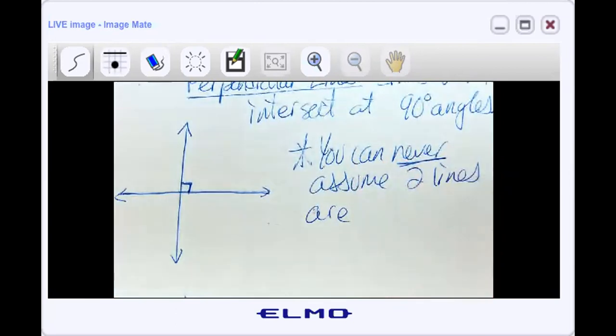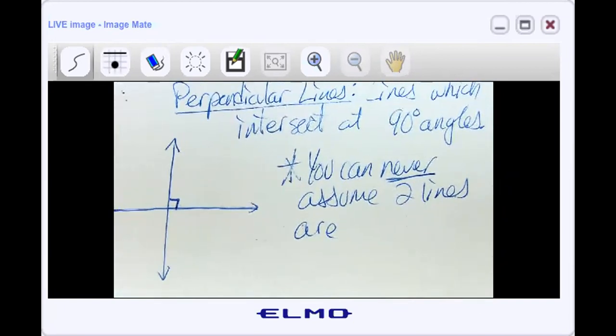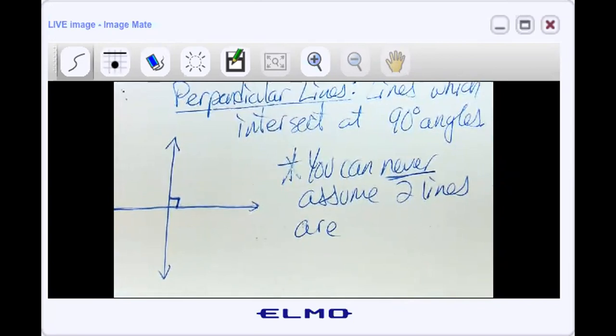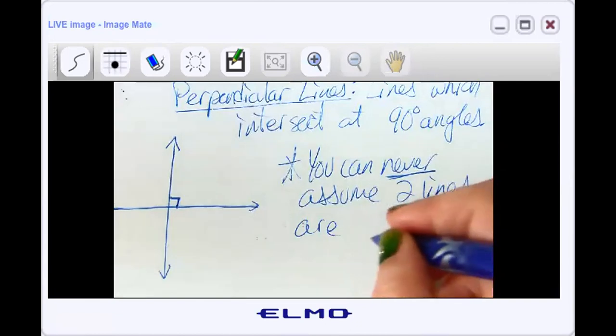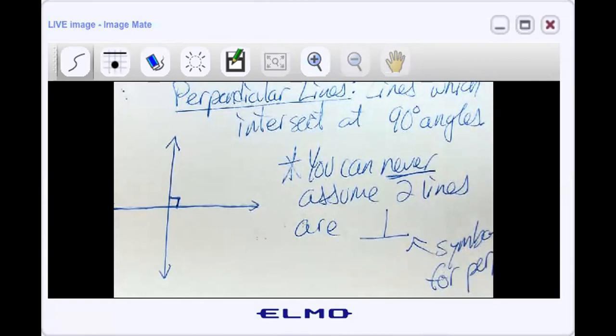You can never assume two lines are perpendicular. And you know that there's a symbol for the word perpendicular because that's an awfully big word and I don't like writing big words all the time. Does anybody know the symbol for perpendicular? It's basically a capital T that's upside down. So it looks like this. That's your symbol for perpendicular. So now you don't have to write that word anymore.